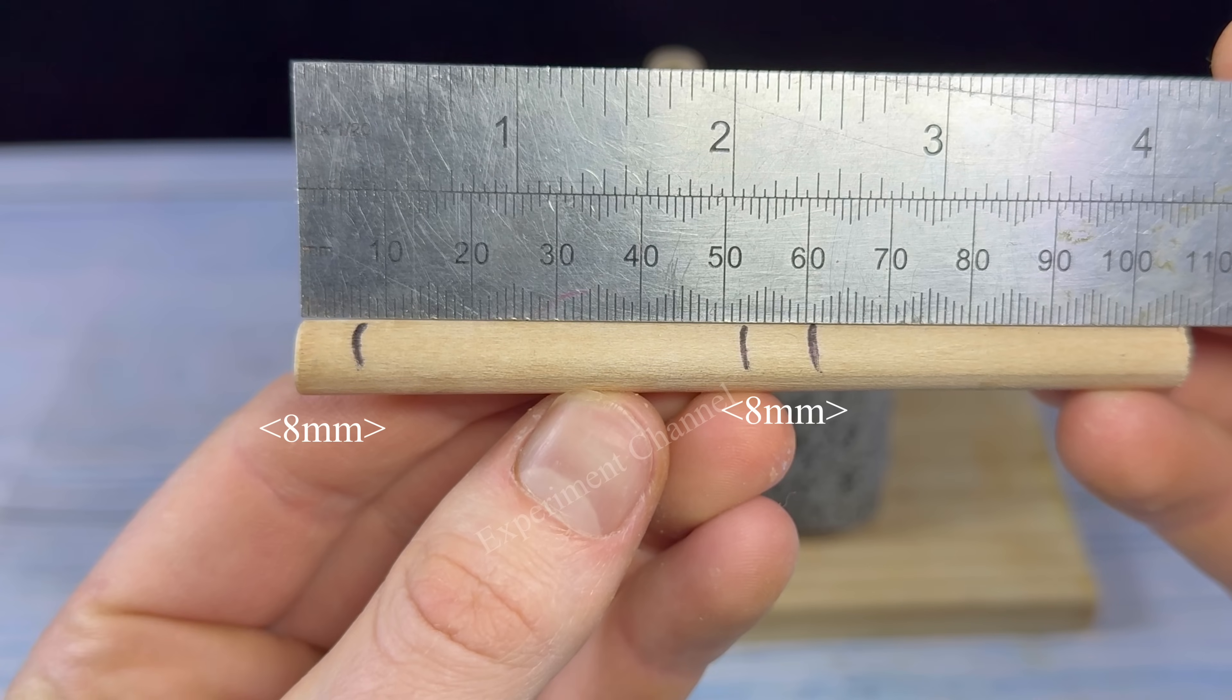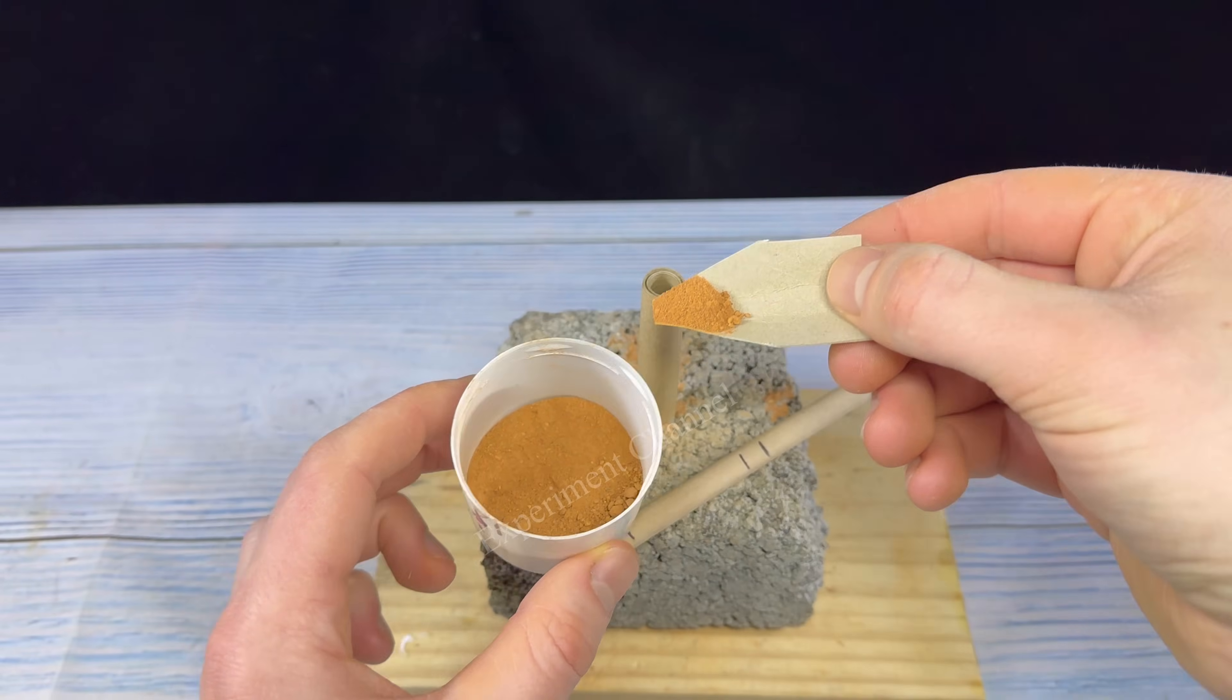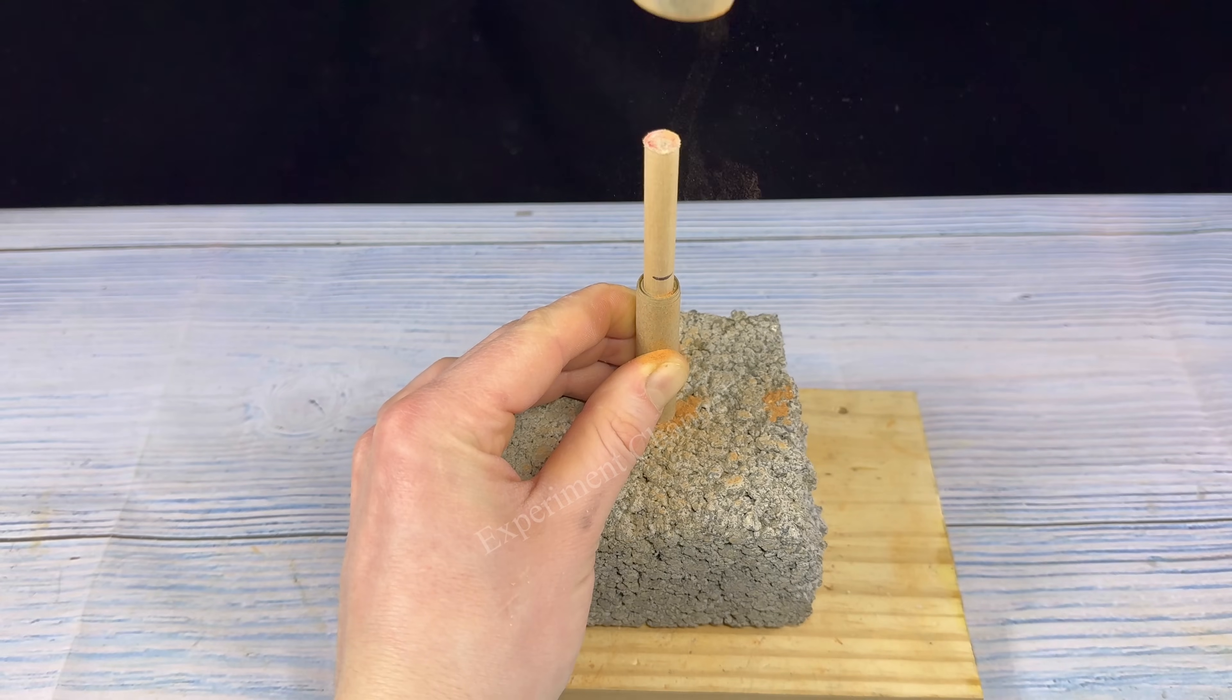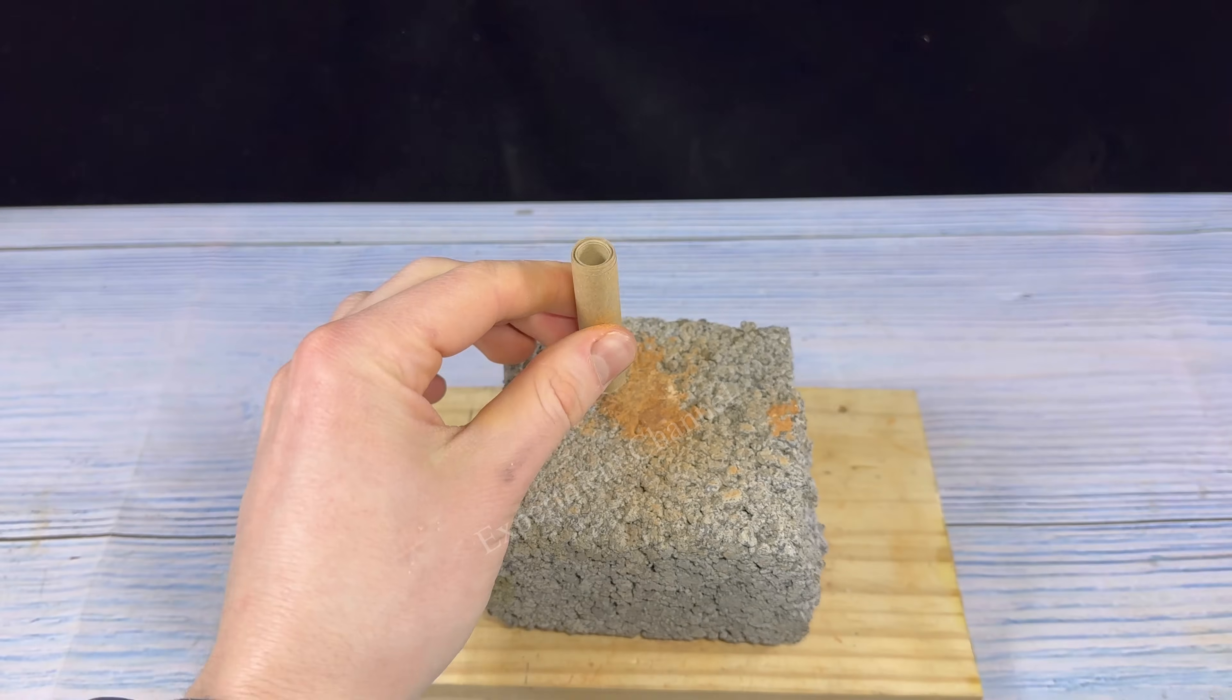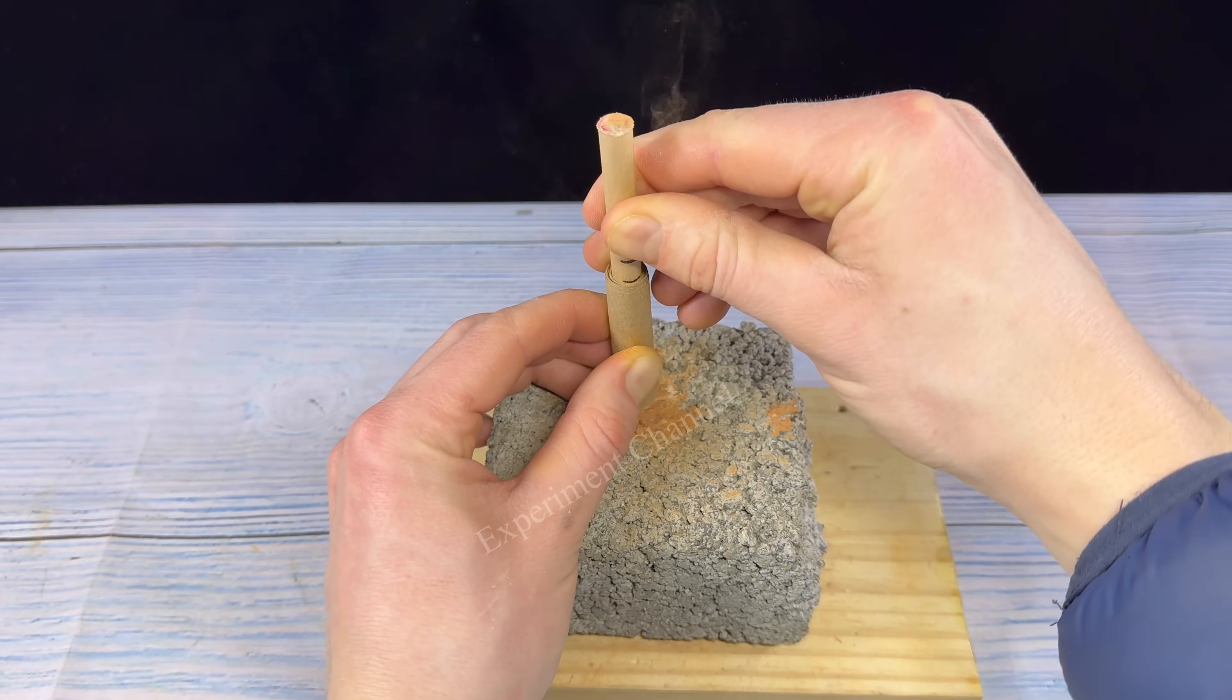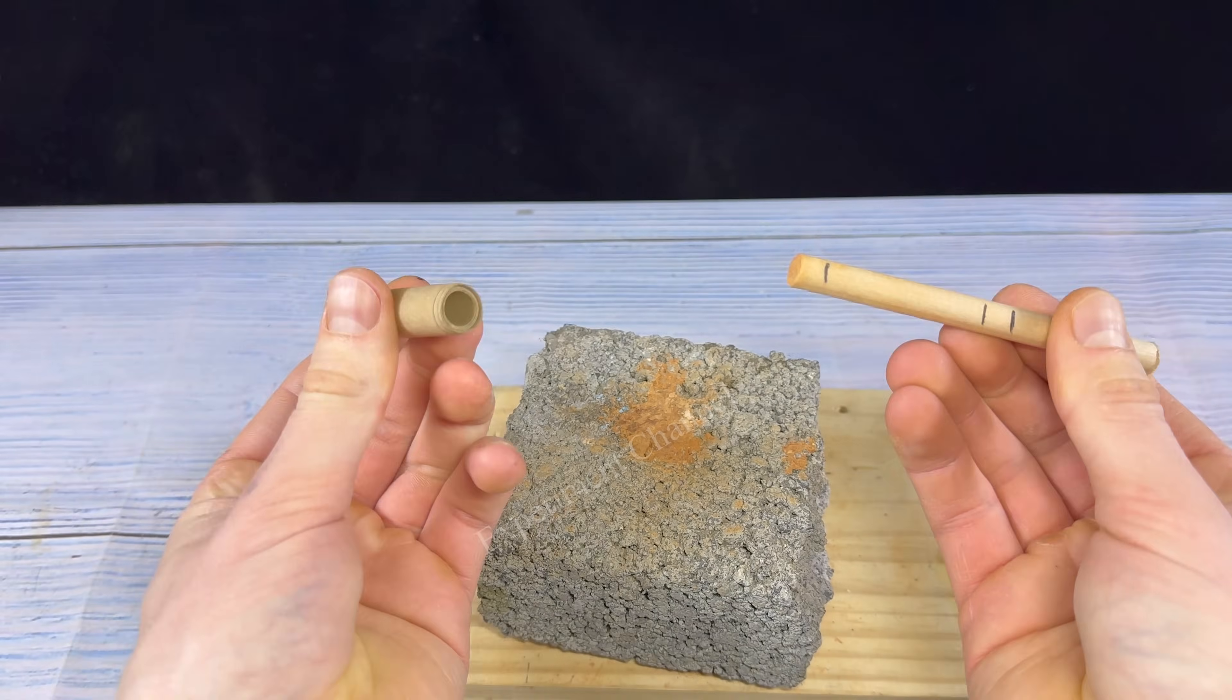Here I have pre-marked our dowel 8mm on each end. This will be where our plug placement will be. First I'll take some clay and we're going to ram that down. This will make a nice solid plug. Once we meet the line, we're all good to go.